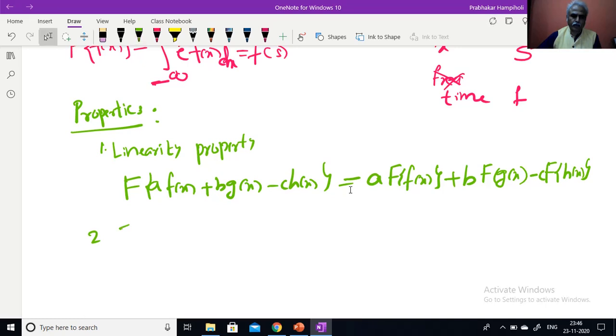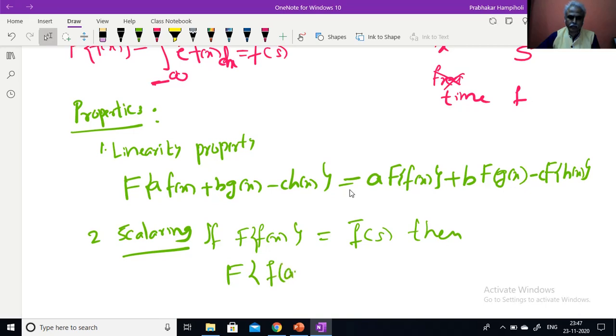Next one is scaling property. It is making an image bigger or smaller. If you make this x as 10x, 100x - bigger image; x by 100 - smaller image. So that scaling we do. If Fourier Transform of f(x) is F̄(s), suppose an object is there, its image is there. If you make the object bigger, Fourier Transform of f(ax) is 1/a · F̄(s/a). If you make multiplication here, this will be division here and reverse also is possible.